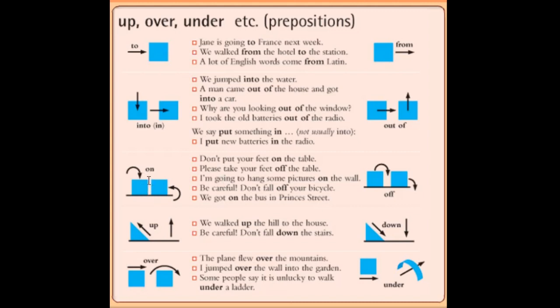There is a use of 'on'. You can see here in the picture and the arrow. It is 'on'. 'On' means on top of. Don't put your feet on the table. So when something is on and directly in contact, we will use 'on'. Don't put your feet on the table - the feet are in touch with the table. Please take your feet off the table. And it is 'off'.